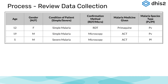Reviewing data collection processes is more than simply reviewing what data are being captured. We are also trying to understand what devices may be used to collect these data, the frequency of entering data, and what level or levels the data will be collected. For example, in this malaria program, a paper form is filled out at the facility with data on age, gender, condition of patient, confirmation method, medicine given, and malaria species type. We see this on the line list shown.